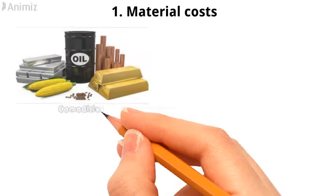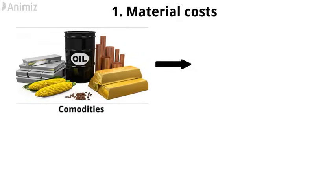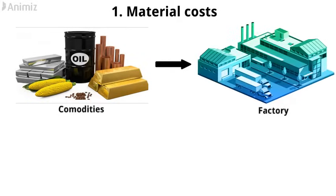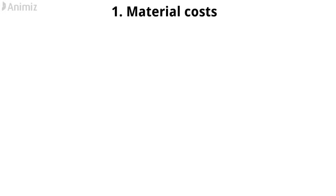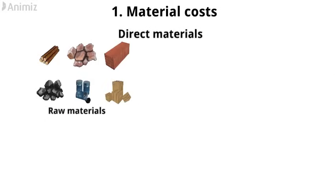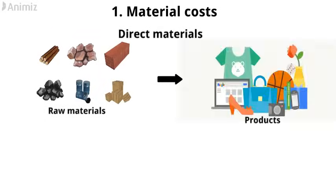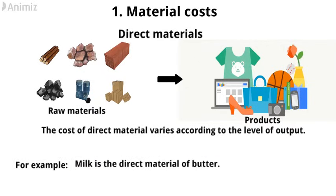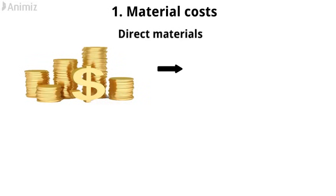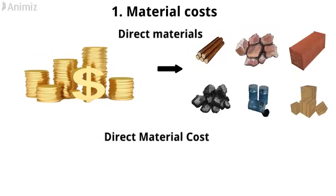1. Material cost. It is the cost of commodities supplied to an undertaking. Material cost is of two types: direct material cost and indirect material cost. Direct material represents the raw material necessary to produce or manufacture a product. The cost of direct material varies according to the level of output. For example, milk is the direct material of butter. The amount of money spent on direct materials is known as direct material cost.